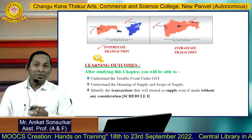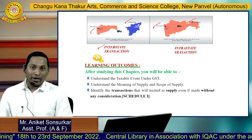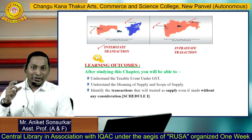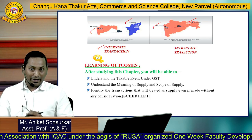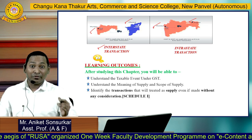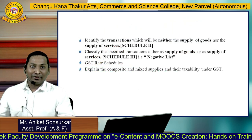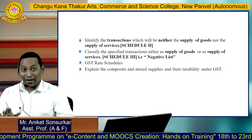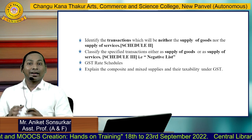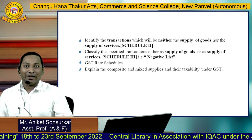Here are the learning outcomes described by the ICAI Institute. After studying this chapter, you will be able to understand the taxable event under GST. Second, you will understand the meaning and scope of supply. Third, you will identify transactions treated as supply even if made without consideration — that is Schedule 1. Fourth, you will identify transactions that are neither supply of goods nor supply of services — that is Schedule 3. Schedule 2 classifies specified transactions as either supply of goods or supply of services.